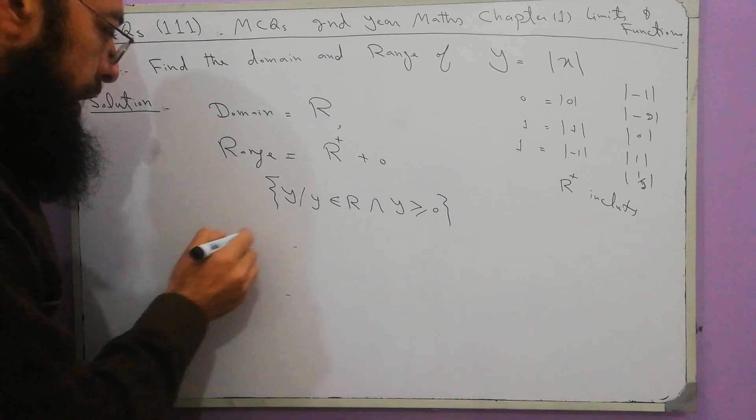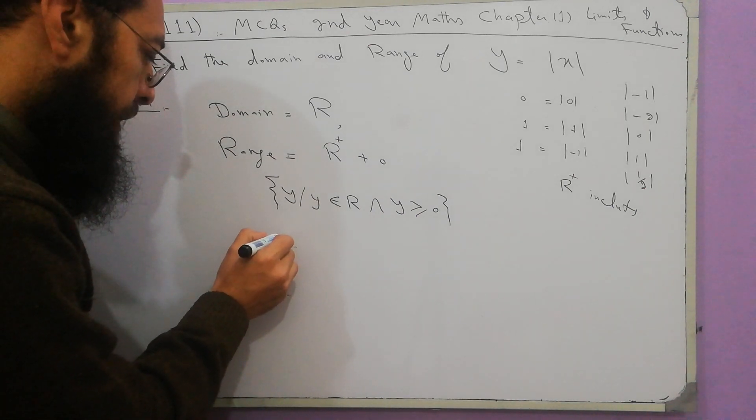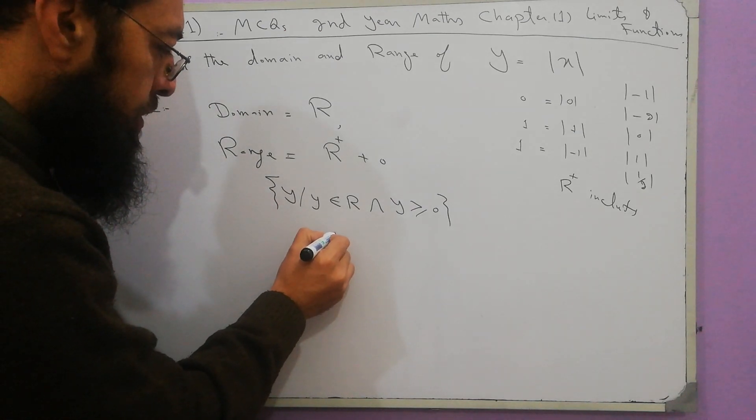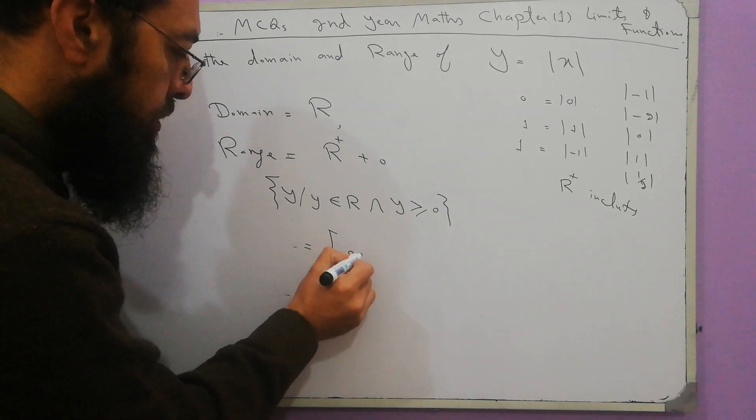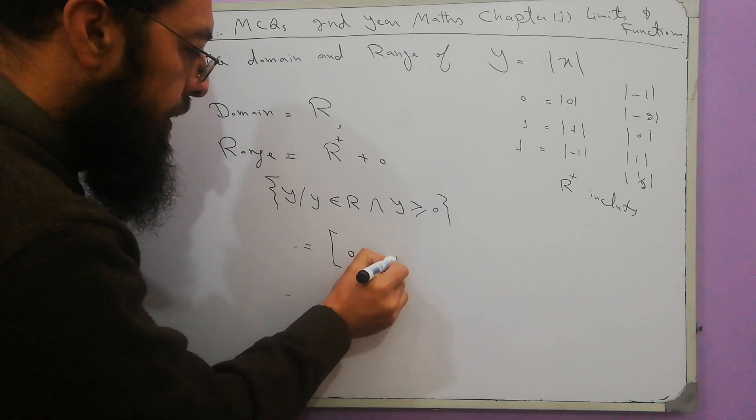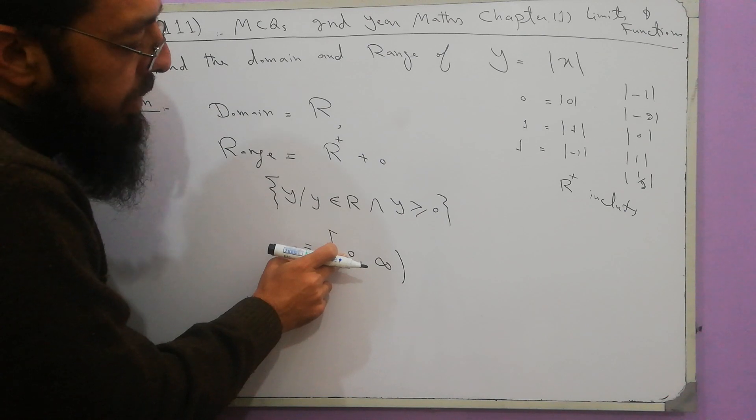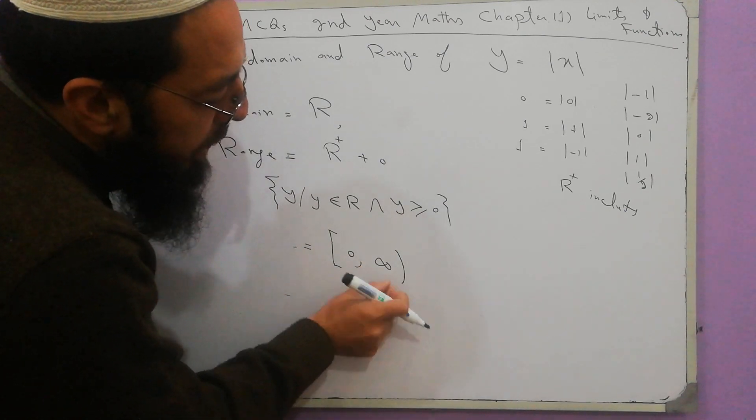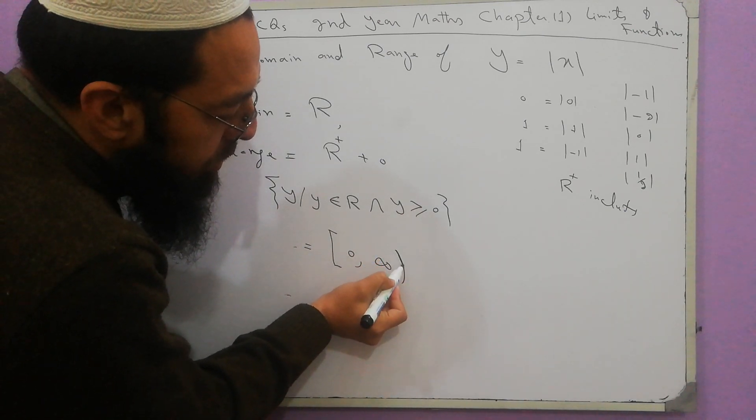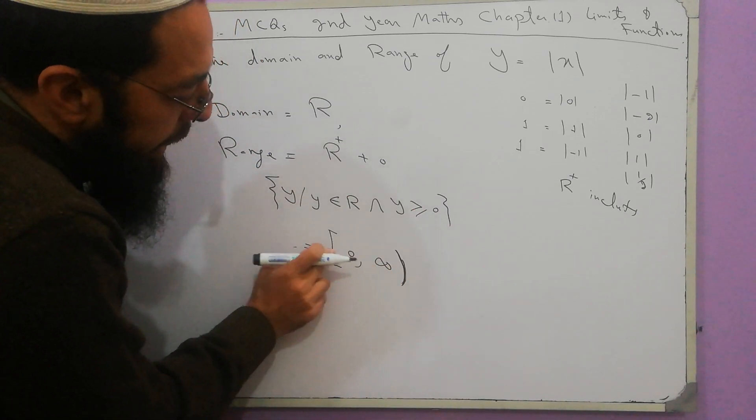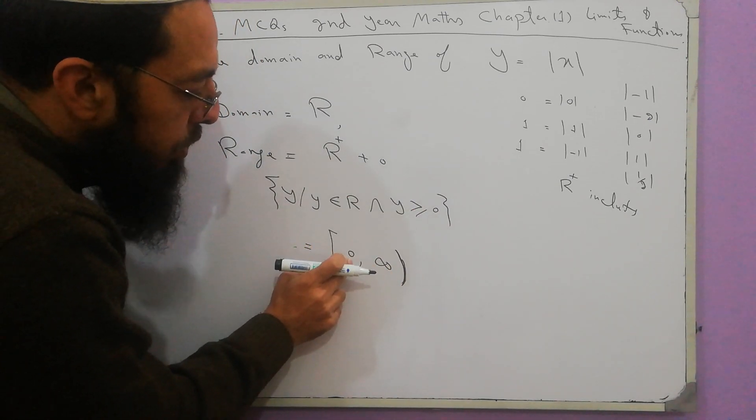Or it may be written in other forms such as range is equal to 0 up to infinity. This is closed interval. It means that 0 is included and all positive values, and infinity is not included. This is open interval. Open interval means that this term is not included and closed interval means that this 0 is included.